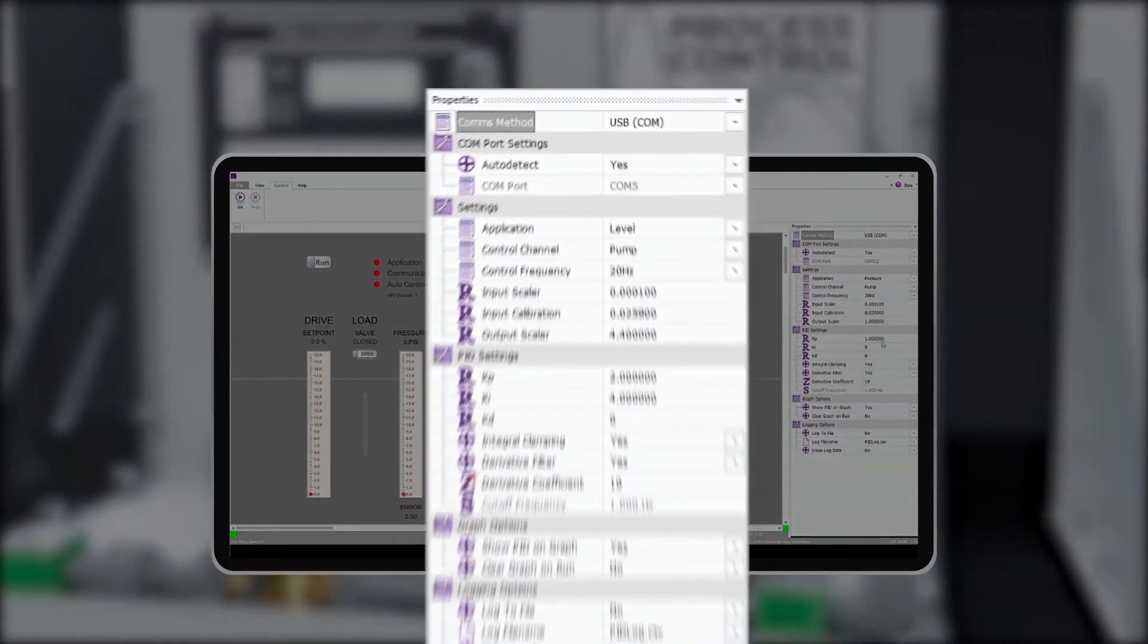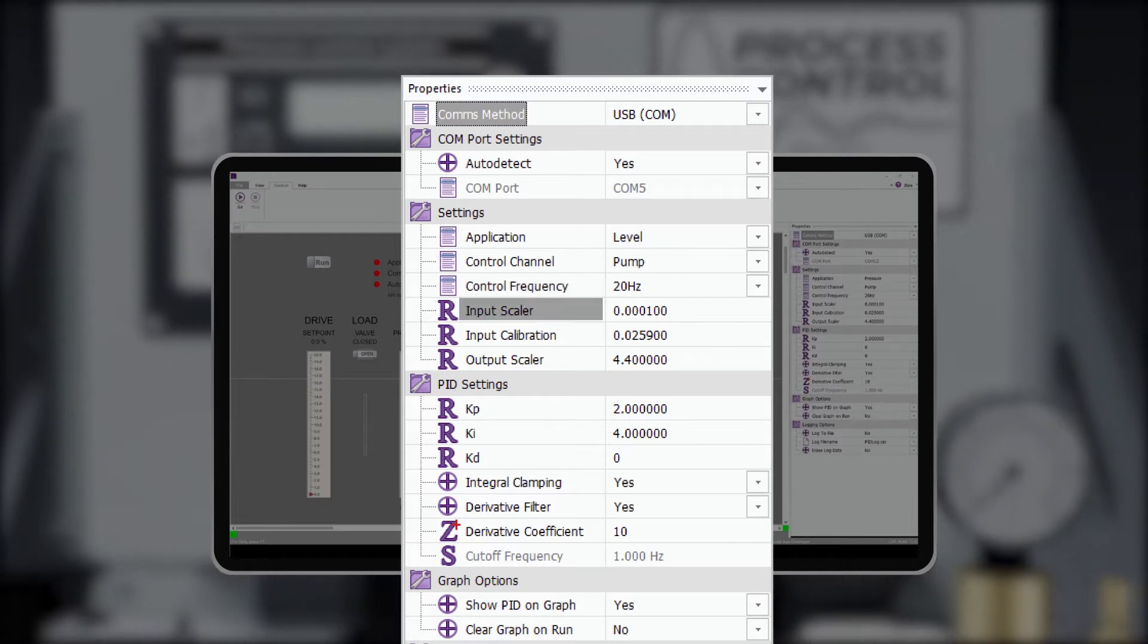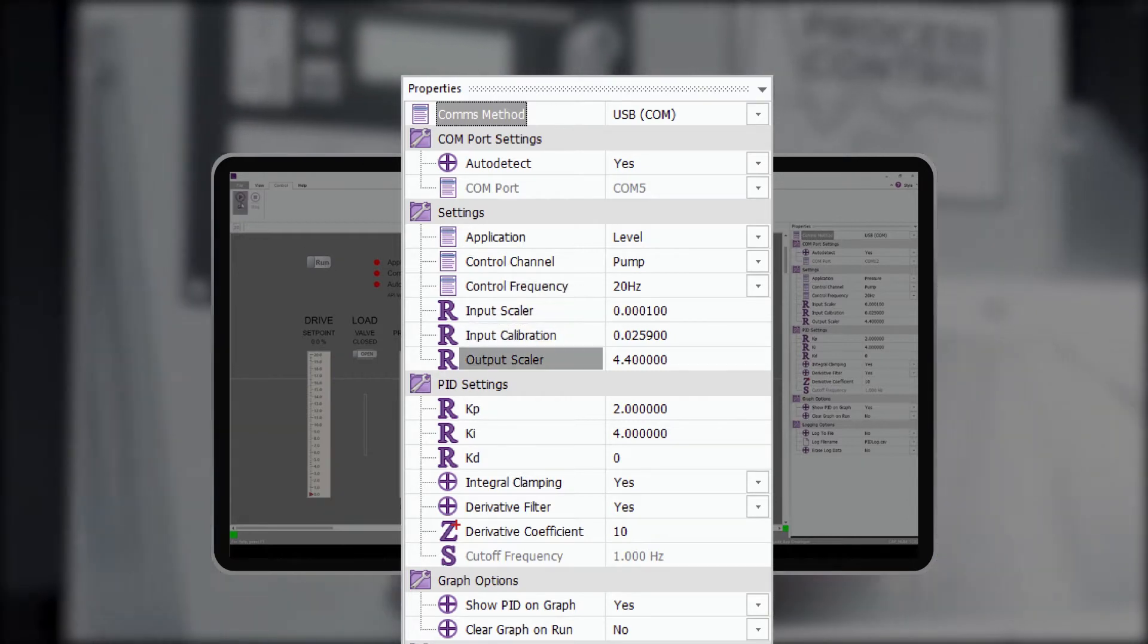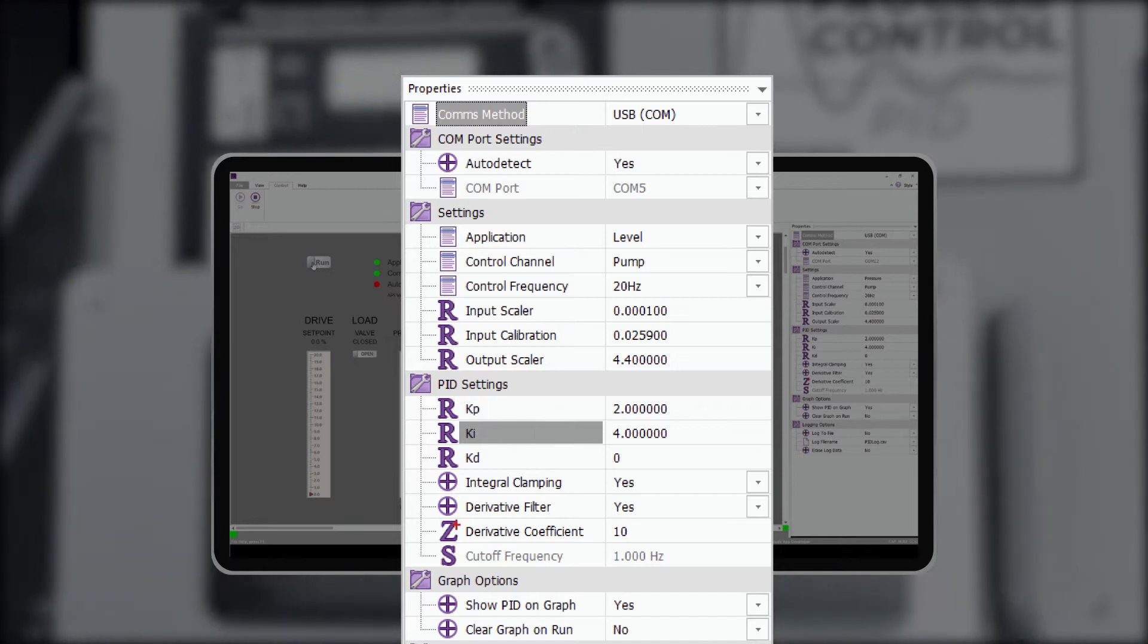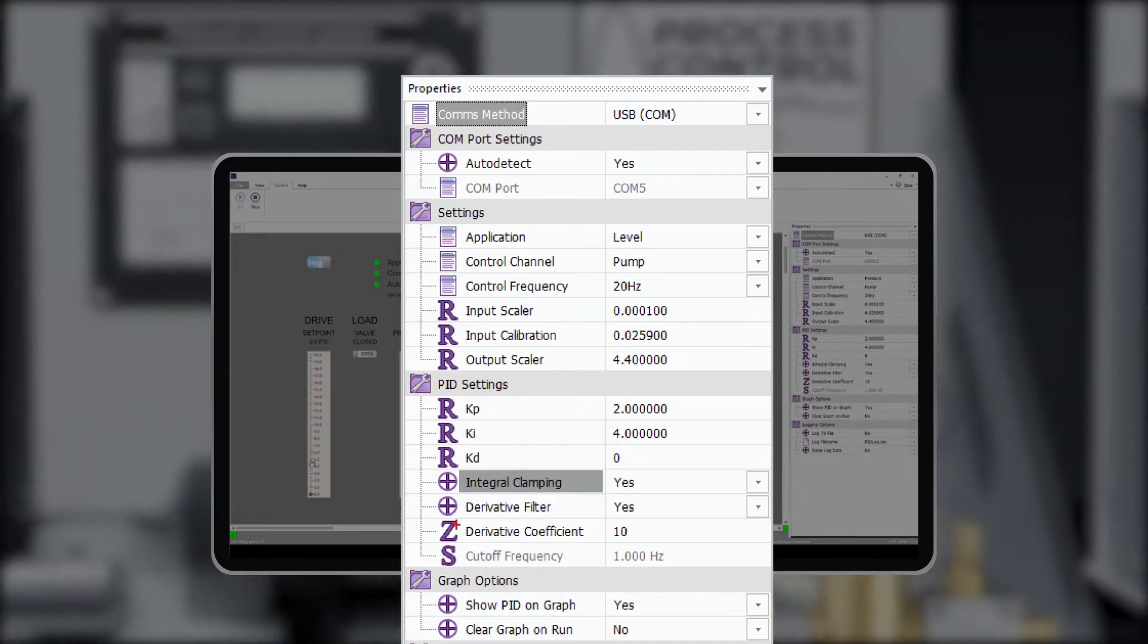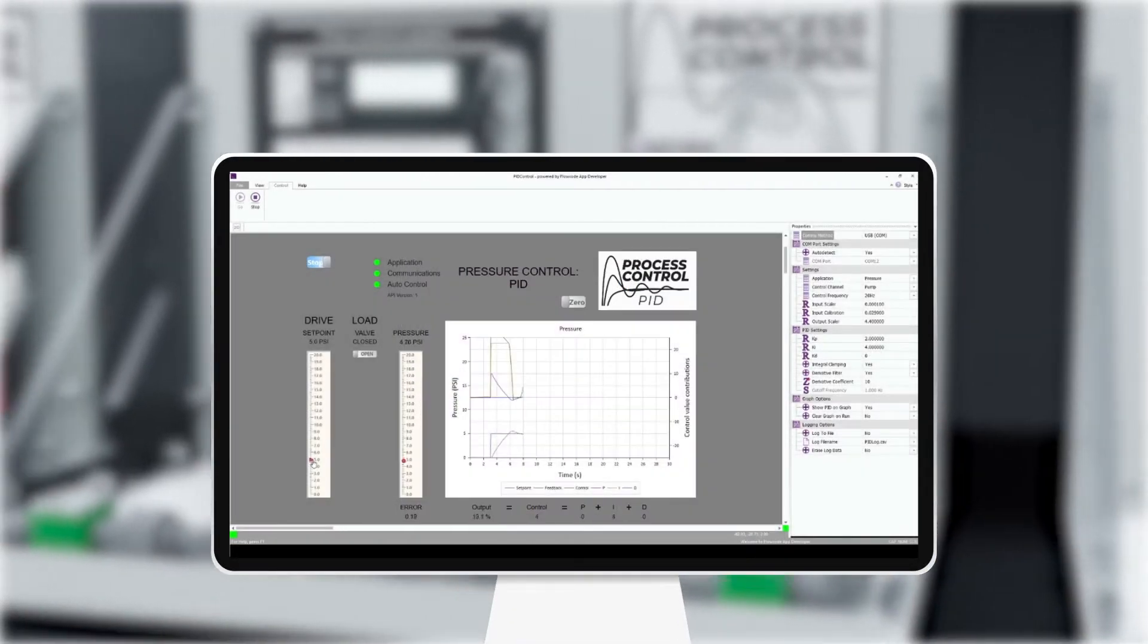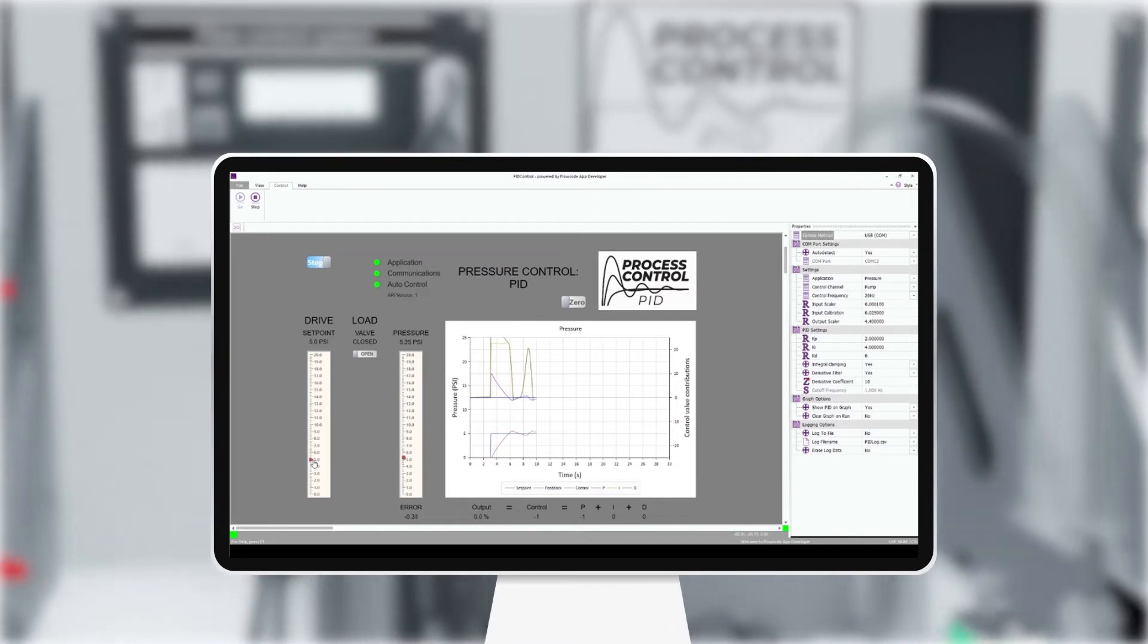Students can set Kp, Ki, and Kd. Also, students can set integral clamping on or off and can implement a derivative filter with different coefficients. Data can be seen on the internal graph or can be saved to a CSV file for later analysis in Excel.